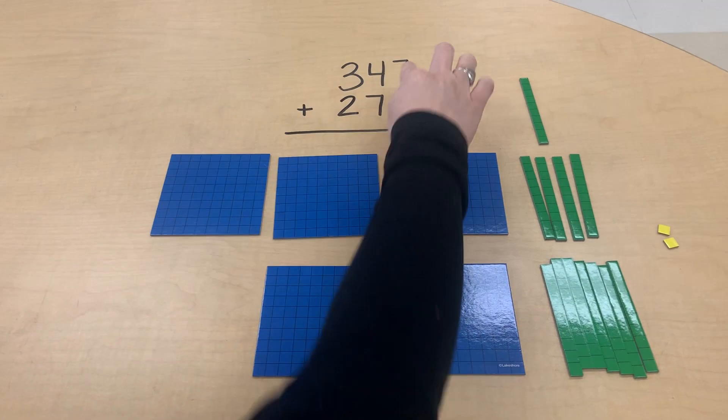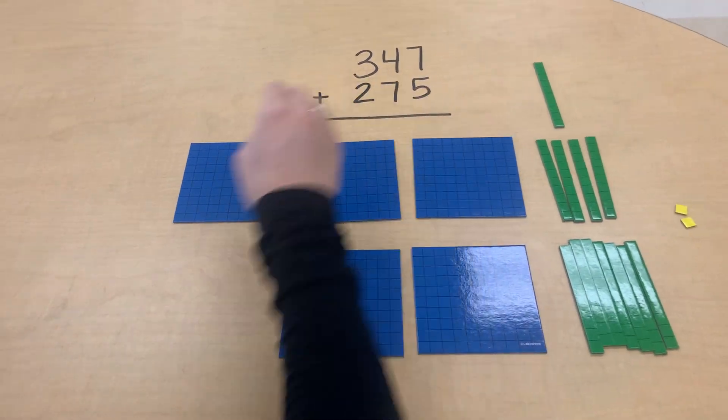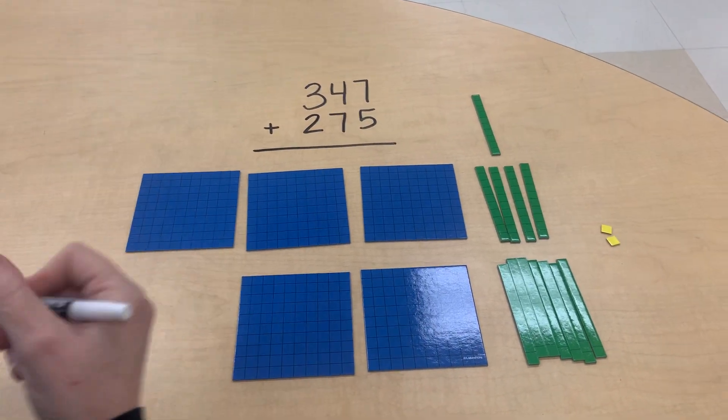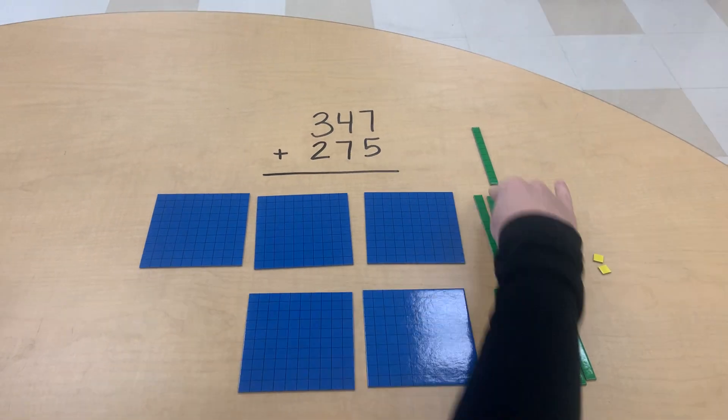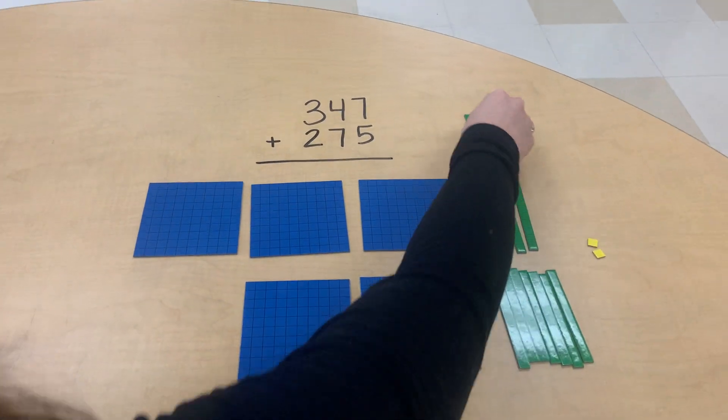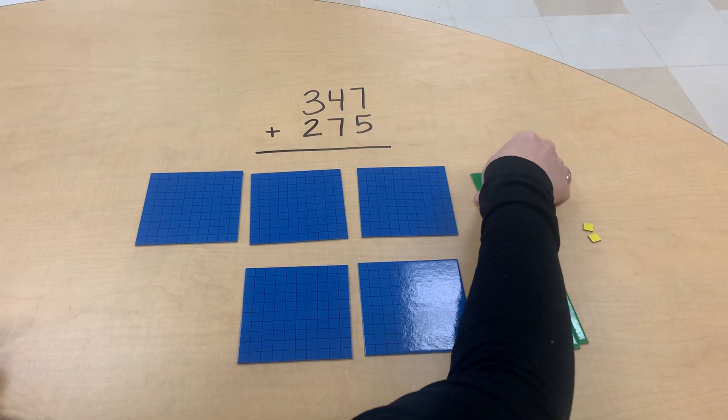All right, so then we've added our ones. So we'll have a two there. Then we have our tens that we need to add. So we will add all of this together.